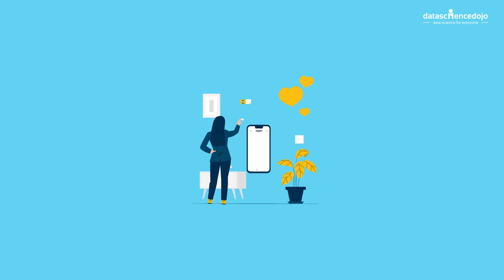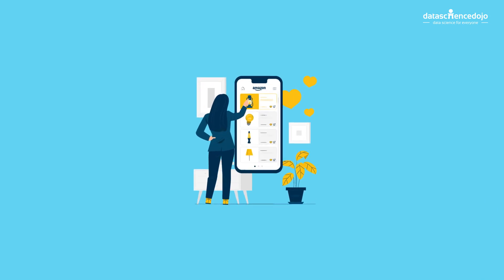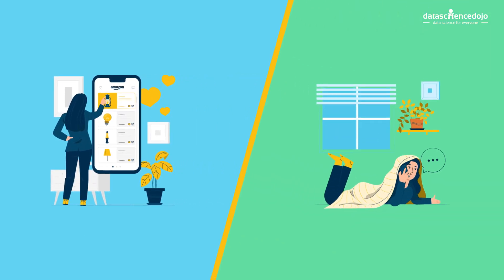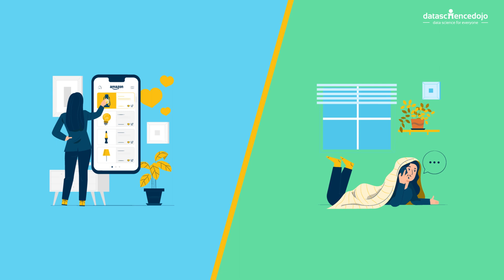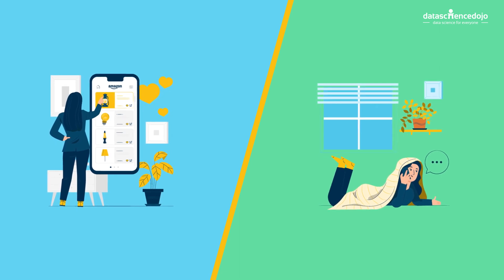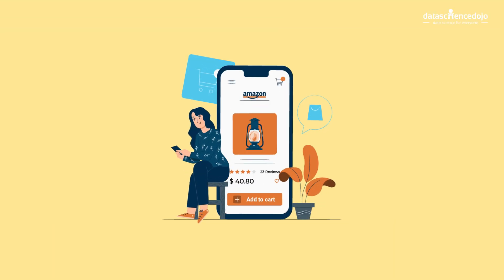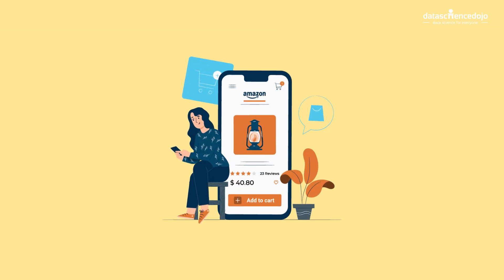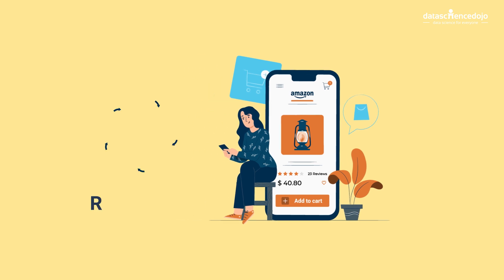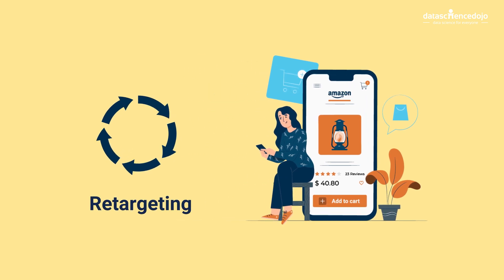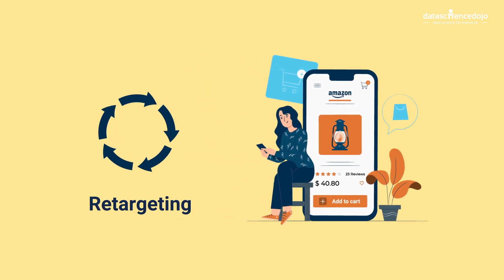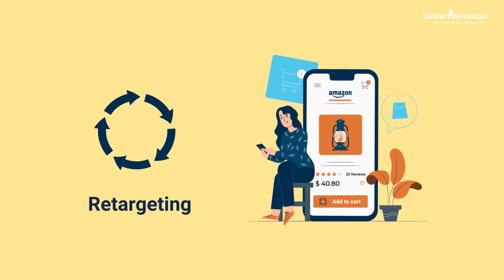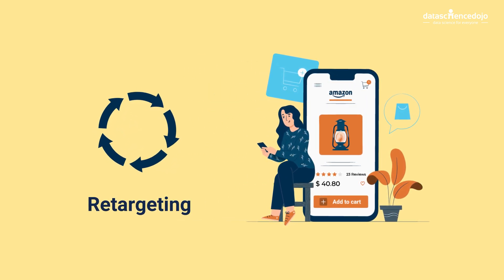Let's say you're trying to buy a lamp on Amazon, and you add that lamp to your cart, but you get distracted by a phone call and never complete the transaction. Amazon knows that you're interested in the lamp but you haven't purchased it yet, so they'll use retargeting to re-engage you as a potential customer.